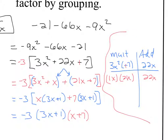To sum up: put the terms in descending order, factor out the GCF, split the middle term. Once you've done that, the next two steps are factoring by grouping, which is what we did yesterday. Let's go to the back and do two more examples.